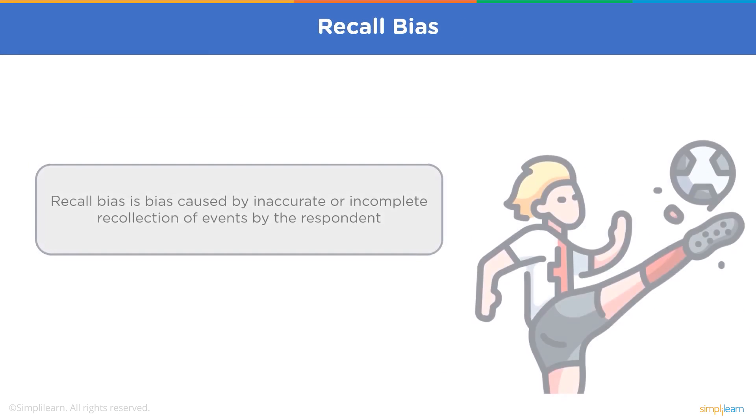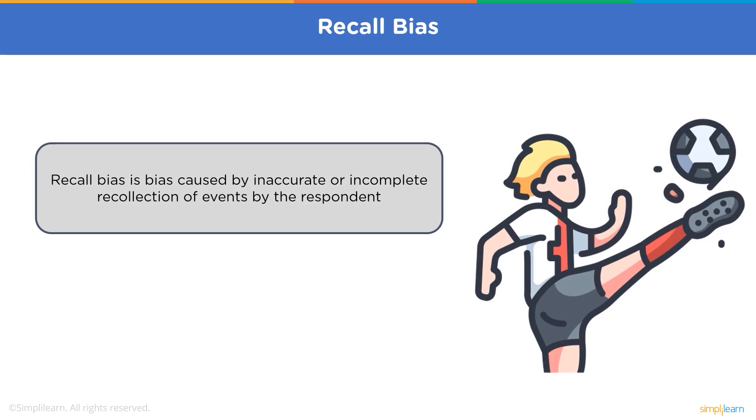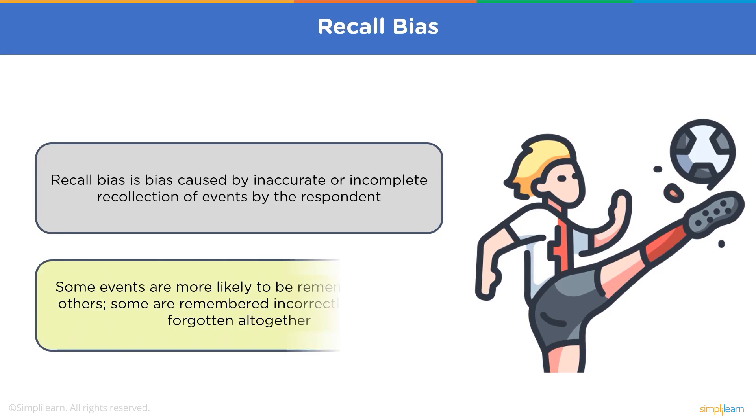Recall bias. Recall bias occurs when respondents' recollection of events is inaccurate or incomplete. It's especially problematic when it comes to retrospective survey questions. For example, suppose you are asked for a football match that happened three years back. Now, you may remember the goals and the good moments of the football match, but might not be able to recall the bad moments or the fouls or the mistakes that happened in that match. So if you try to guess work here, in this case, a recall bias can occur.